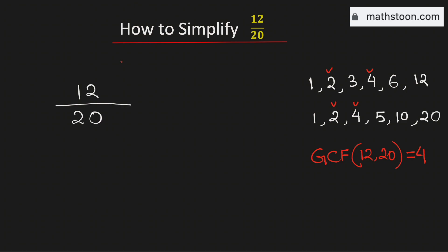So to simplify this fraction we need to divide both 12 and 20 by their greatest common factor which is 4. By doing so we will get 3 in the numerator and 5 in the denominator.